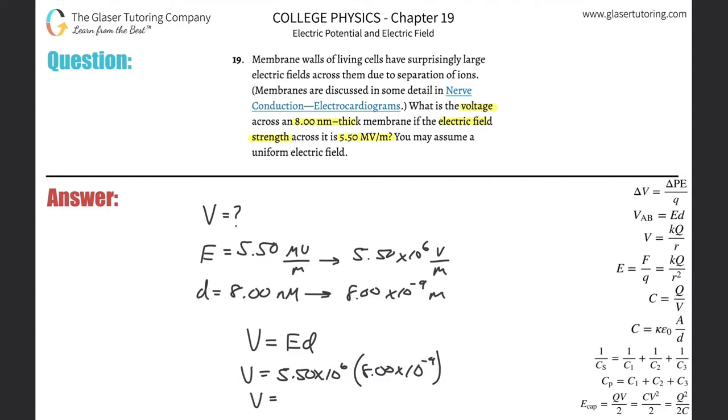5.5 times 10^6 multiplied by 8 times 10^-9, and we get a value here of about 0.044 volts per meter. Oh, excuse me, what am I talking about? Just volts, just volts. Just seeing if you're paying attention.